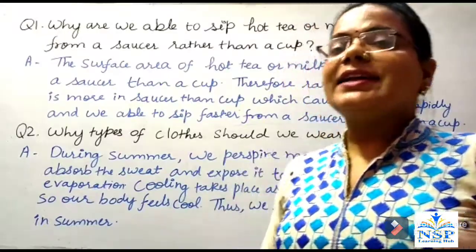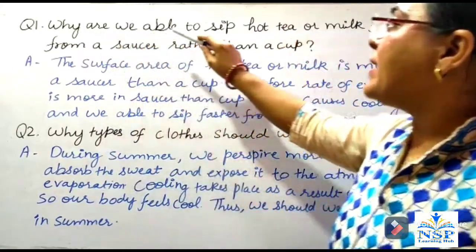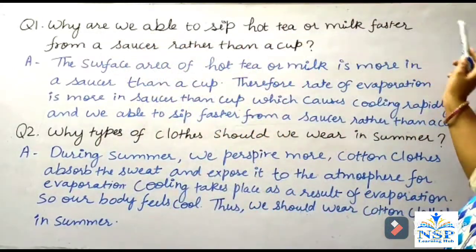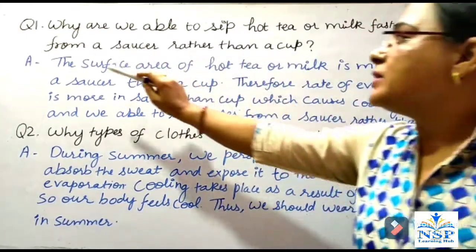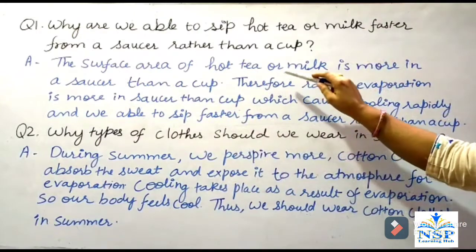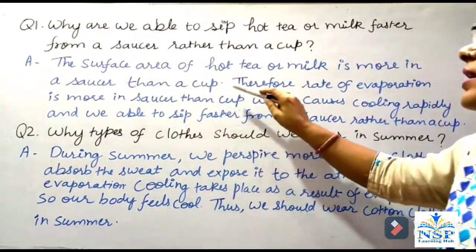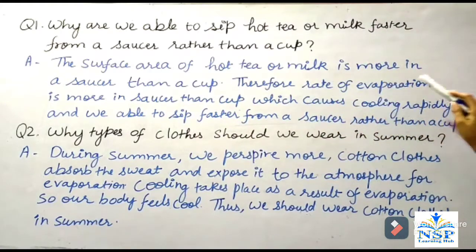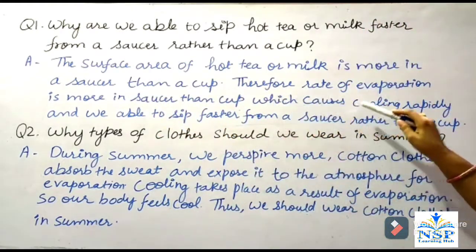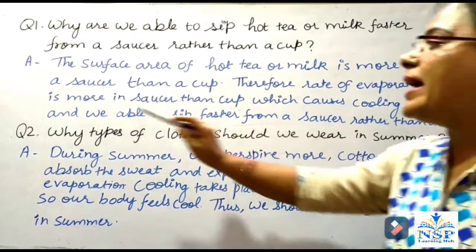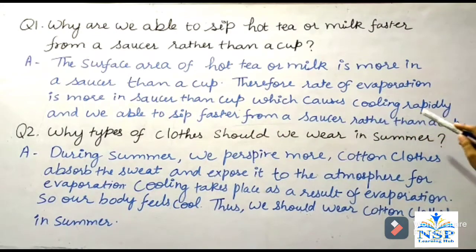Students, there are some questions related to evaporation. Why are we able to sip hot tea or milk faster from a saucer rather than a cup? The surface area of hot tea or milk is more in the saucer than in a cup. Therefore, the rate of evaporation is more in a saucer than a cup, which causes cooling rapidly, and we are able to sip faster from a saucer rather than a cup.